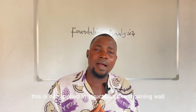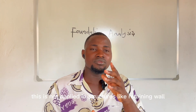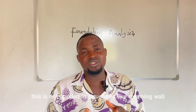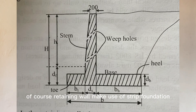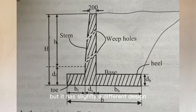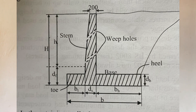This formula is not applied in structures like retaining walls. Of course, retaining walls make use of strip foundation, but they have a slightly different design where we talk of the toe and the heel. So we'll be exempting the retaining wall.